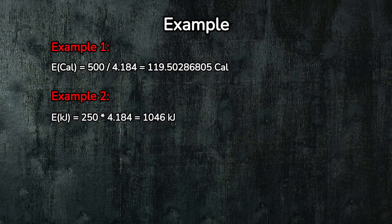Example 2: What if you have something in calories and you want to convert to kilojoules? Let's say a candy bar has 250 calories. You multiply 250 by 4.184. That gives you 1046 kilojoules.